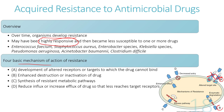Mechanism B is the formation of an enzyme that breaks down the drug before it can have an effect. The drug enters the cell, but an enzyme inside breaks it down so it cannot work.